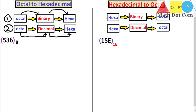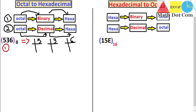First we will use method one, in which we convert octal into binary first and then binary into hexadecimal. To convert octal into binary, we take each digit of the octal number and perform repeated division by 2, since binary is the base-2 number system. So we take 5, then 3, then 6, and start the repeated division by 2.